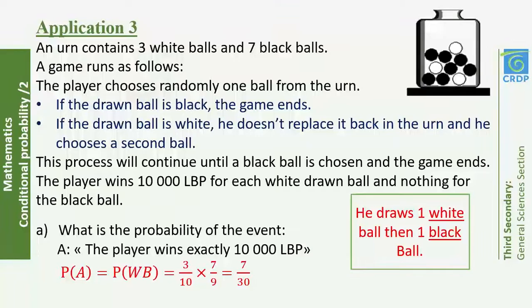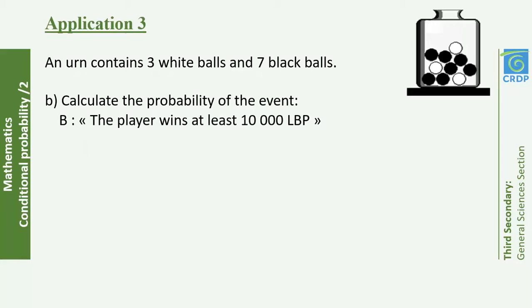To win exactly 10,000 LBP the player must draw one white ball followed by one black ball. P(W then B) = (3/10) × (7/9). The total becomes 9 on the second draw because the white ball was not replaced. This gives P(A) = 21/90 = 7/30.